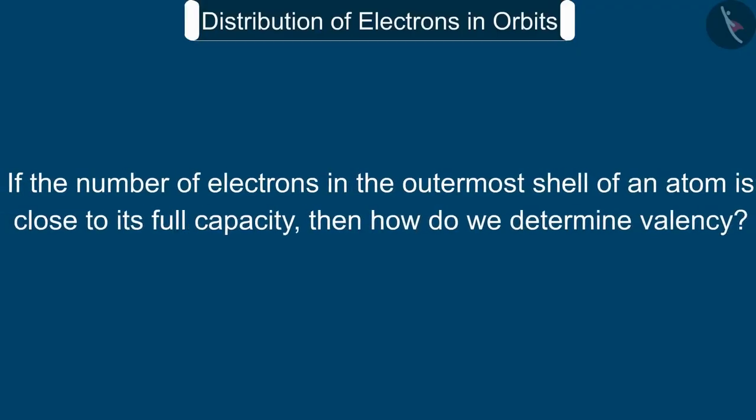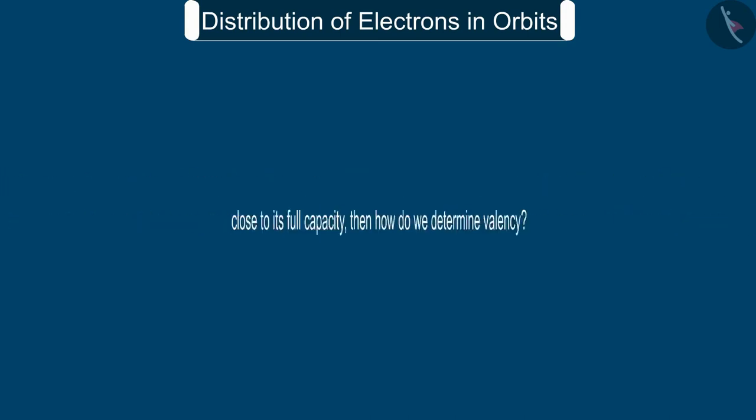But if the number of electrons in the outermost shell of an atom is close to its full capacity, then how do we determine valency? In this case, valency is obtained in another way.